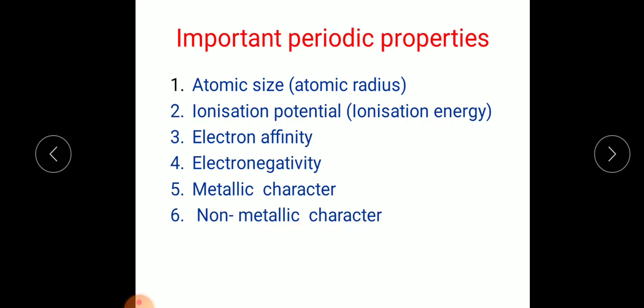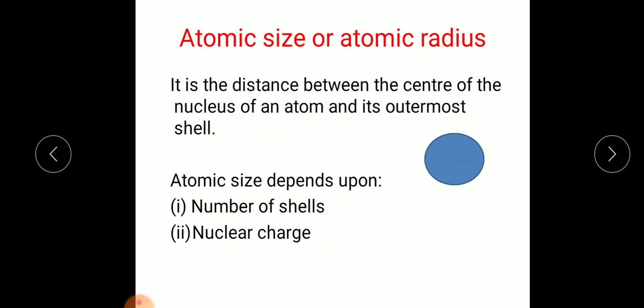The first one we are going to discuss today is atomic size or atomic radius. Atomic size or atomic radius is the distance between the center of the nucleus of an atom and its outermost shell. For example, if you consider an atom with the nucleus at its center, the distance from the center of the nucleus to the outermost shell is known as atomic size or atomic radius. It depends upon the number of shells and the nuclear charge.